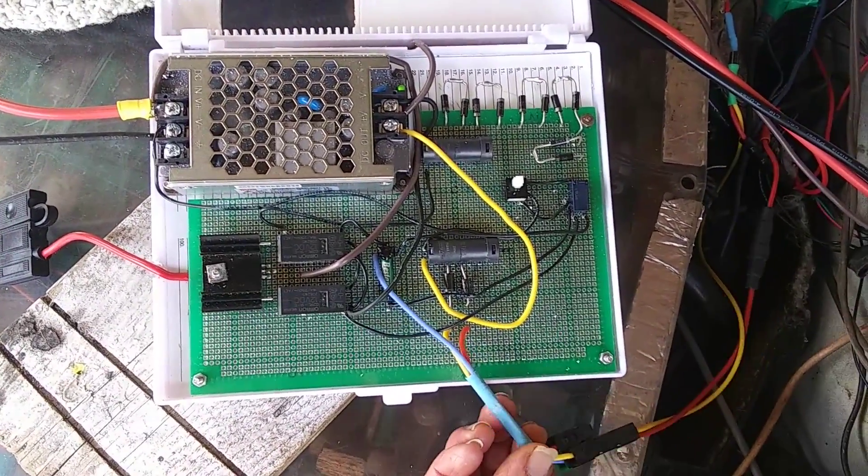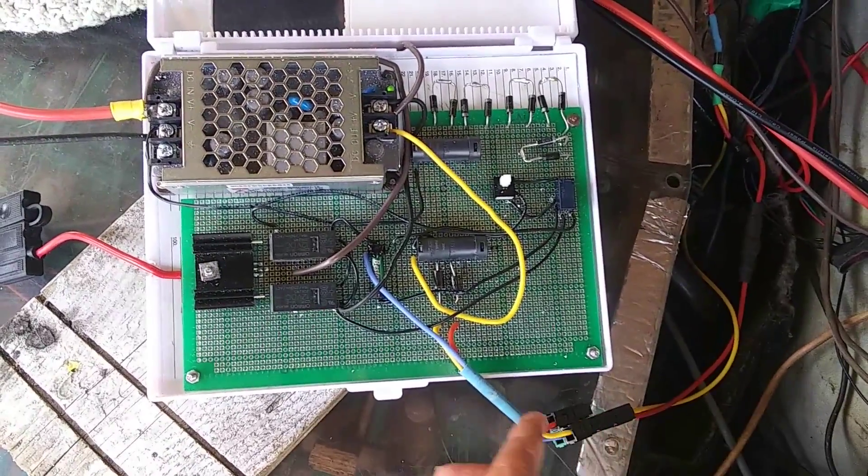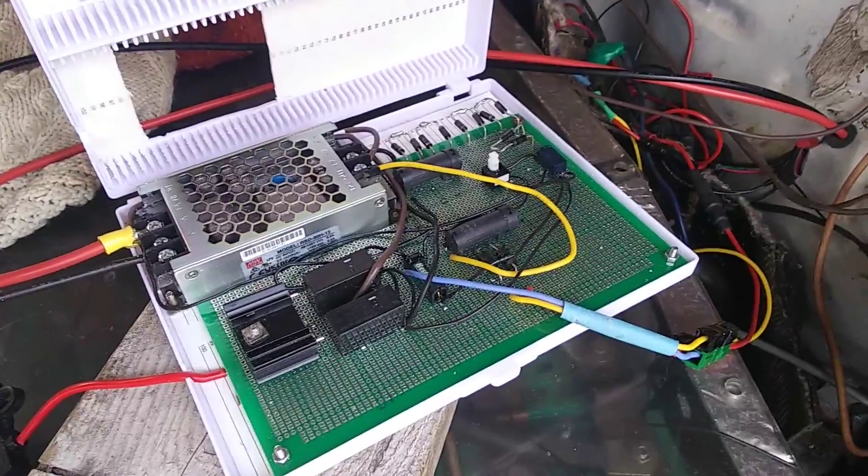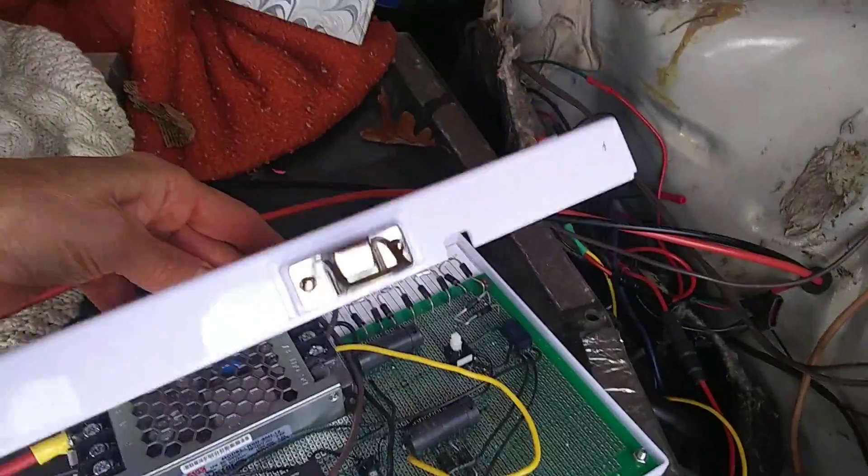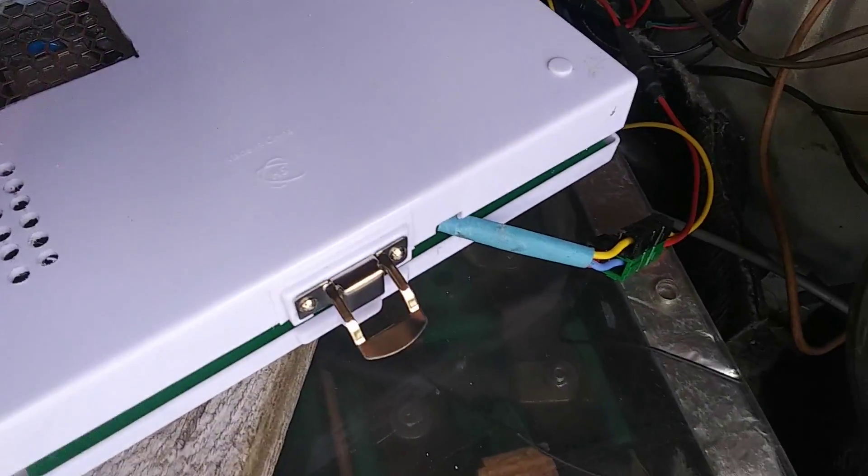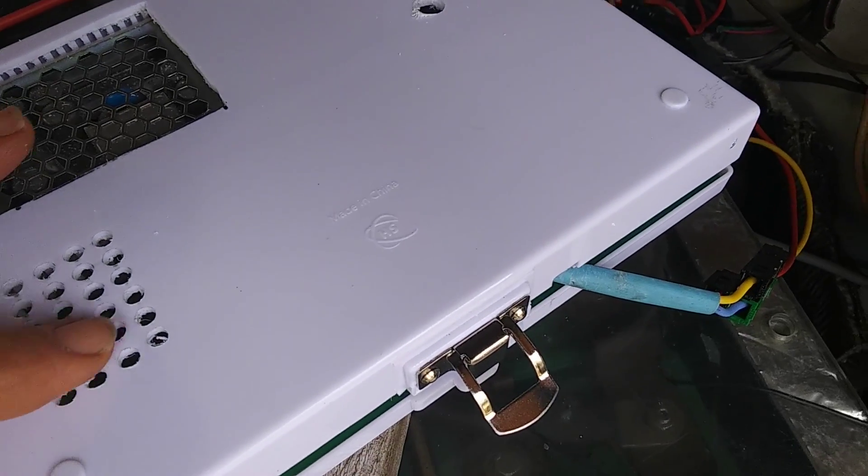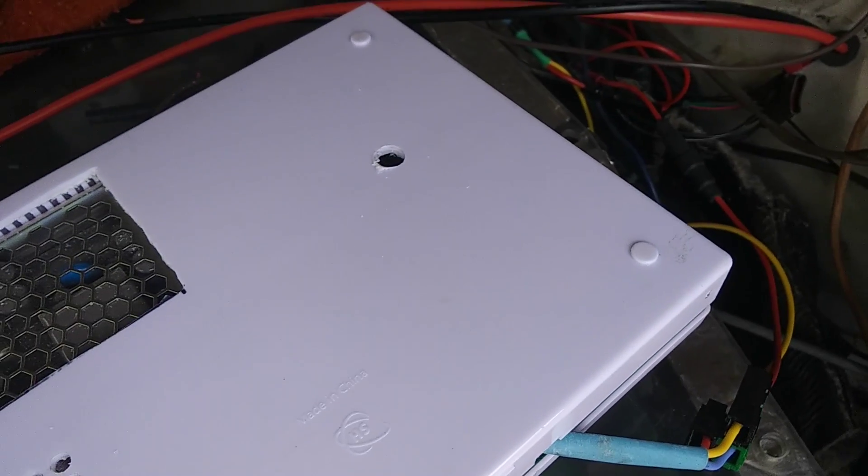This is the connection to the BMS, both the power into the BMS and then the relay signal from the BMS. And in the top I've cut ventilation holes for the DC-DC converter, the Schottky diode, and then a small hole for the reset button.